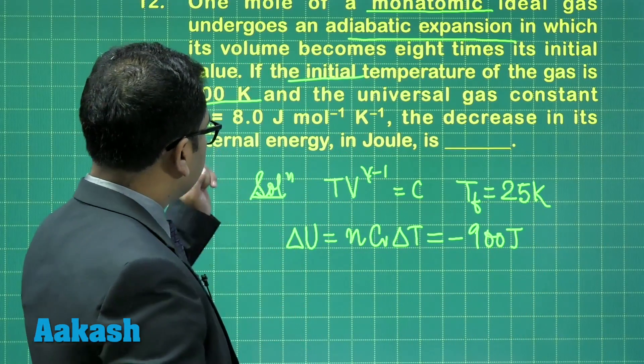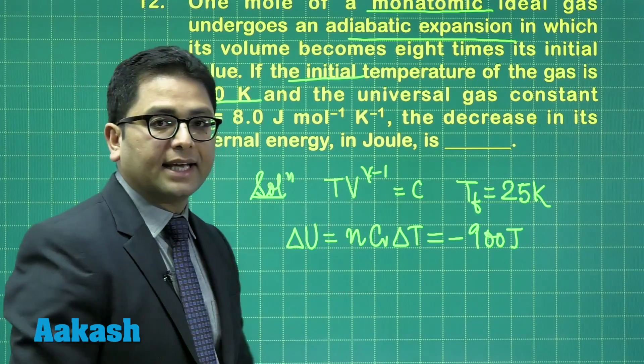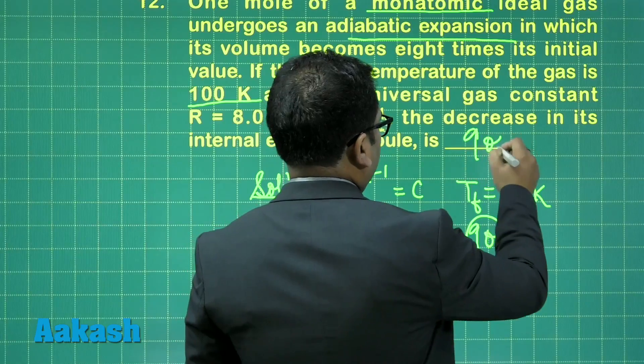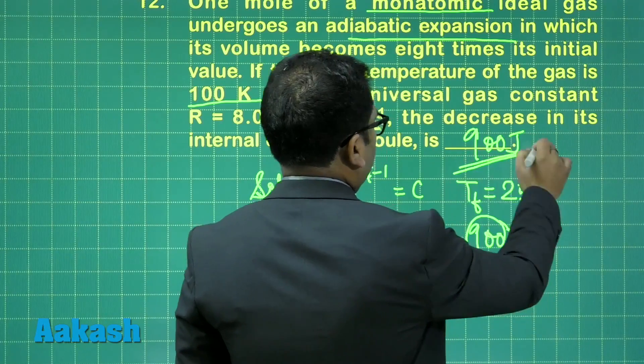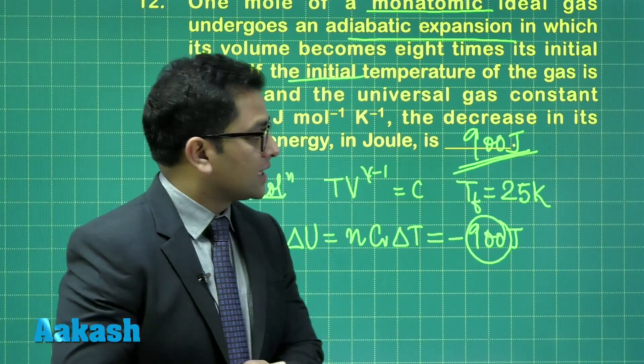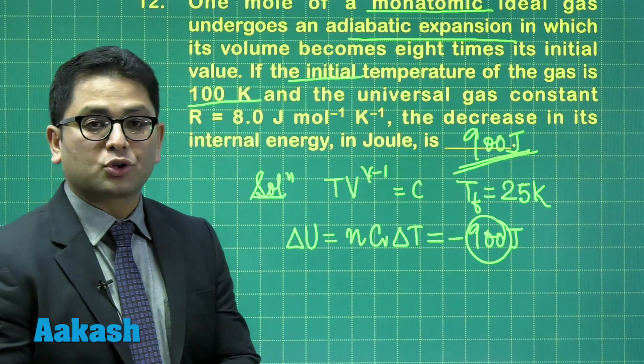So the decrease in its internal energy, the decrease part we need to write, and that value comes out to be 900 Joule. All right. So the correct answer for question number 12 comes out to be 900.